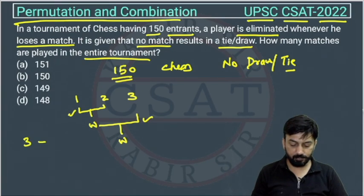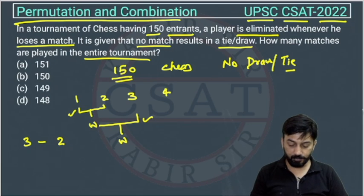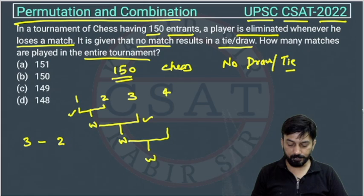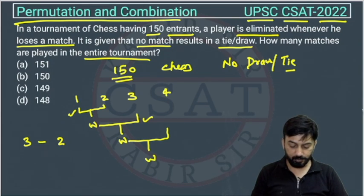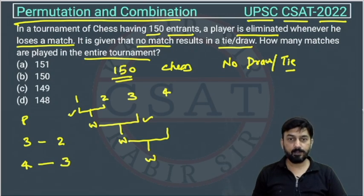Now suppose there are four players. The first plays the second, then the winner plays the third, and then the final winner comes from playing the fourth. So with four players, how many matches happen? Three — first, second, third match.